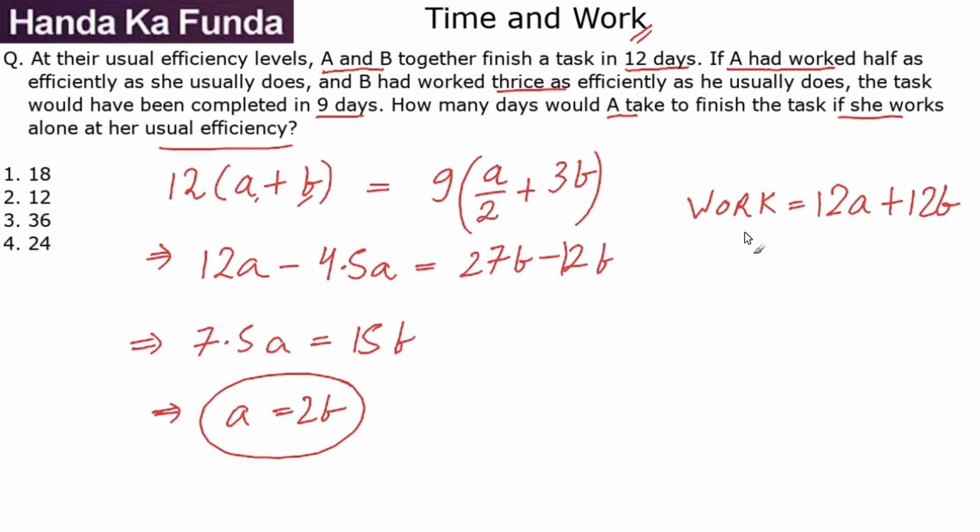Now instead of b, let me use a here. So b would be a/2. So 12 times a/2, which means that the total amount of work that needs to be done is 12a plus 6a, or the total amount of work that needs to be done is 18 times a.